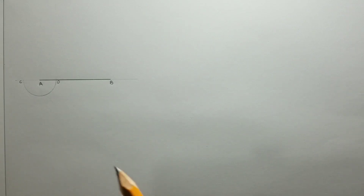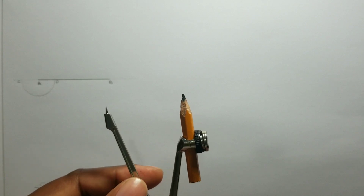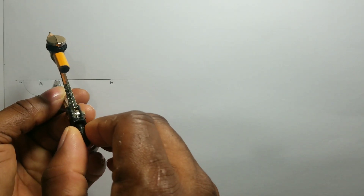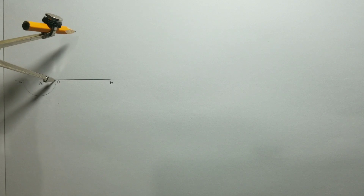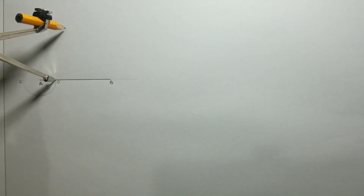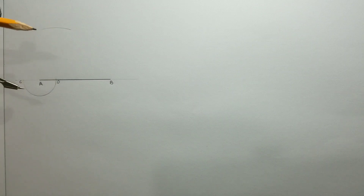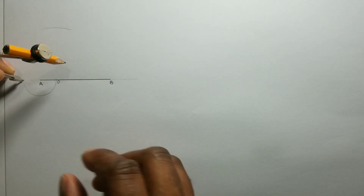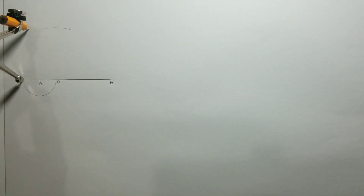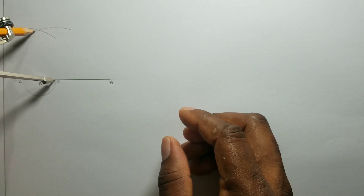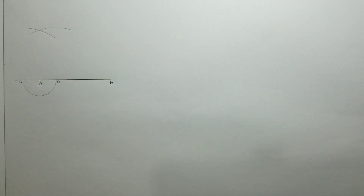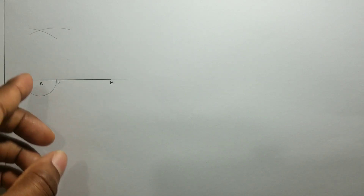Points C and D I will use as centers for my compass. Ensure that your compass is open to a convenient radius. We will scribe arcs from these points to intersect each other. Where the arcs intersect, we will draw a line through to A.